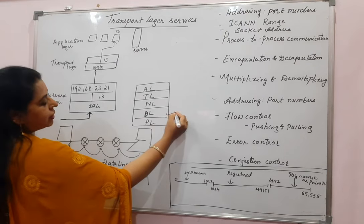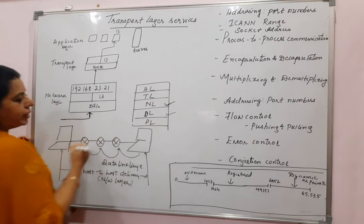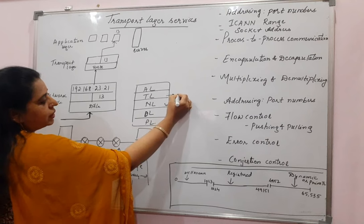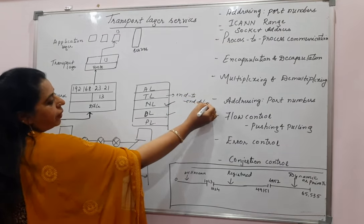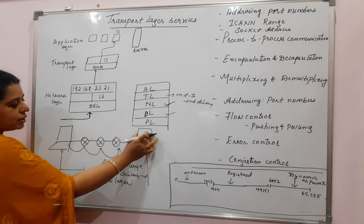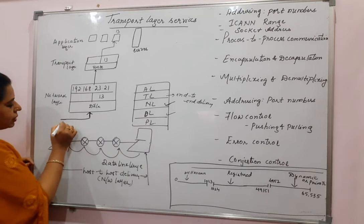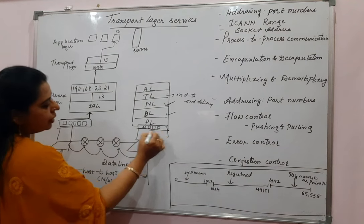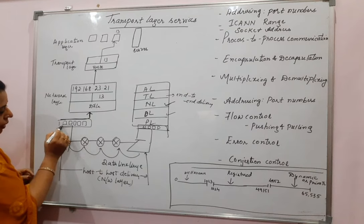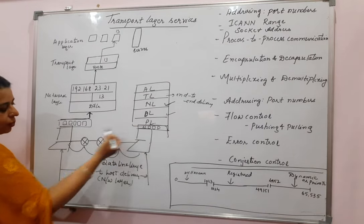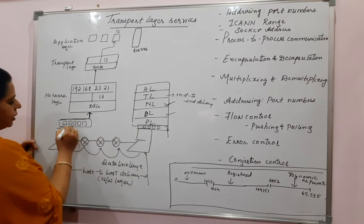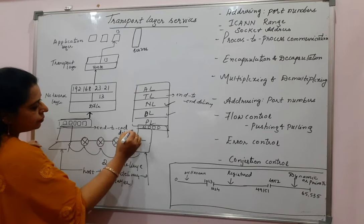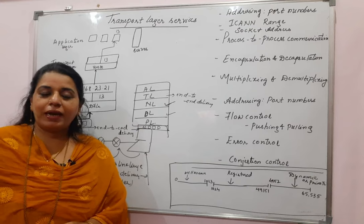Now you are familiar with the functionality of the data link layer and the network layer. Next comes the transport layer. To understand the transport layer, in very simple words we call it end-to-end delivery — it provides end-to-end delivery. In the network scenario, this is one host and this is the destination host. In each of these, there are different processes running at the application layer. From one process, communication happens with another process of the destination host — this is end-to-end communication, provided by the transport layer. Each process is identified by the port number, so we can also call it port-to-port delivery.